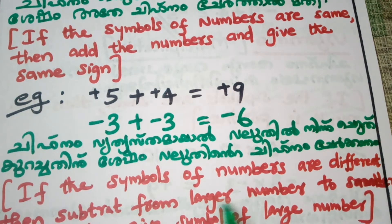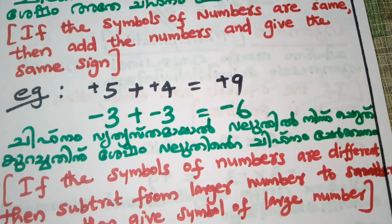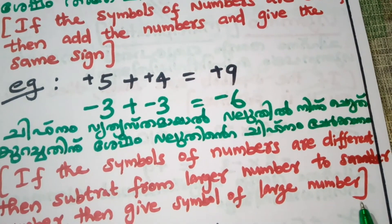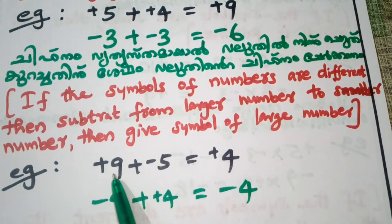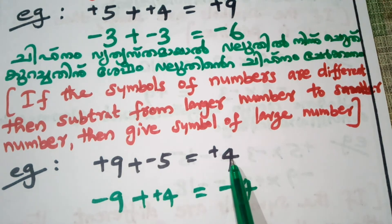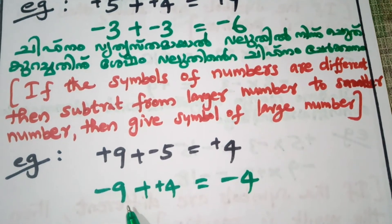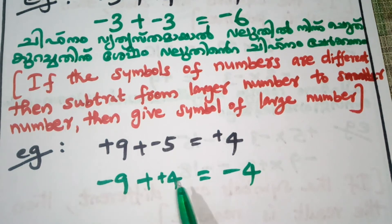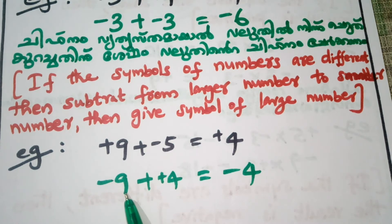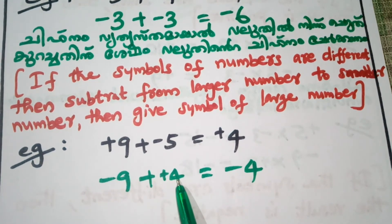If the symbols of the numbers are different, then subtract the smaller number from the larger number and give the symbol of the larger number. For example, 9 is positive and 5 is negative — since 9 is the larger number, the result takes the positive sign.